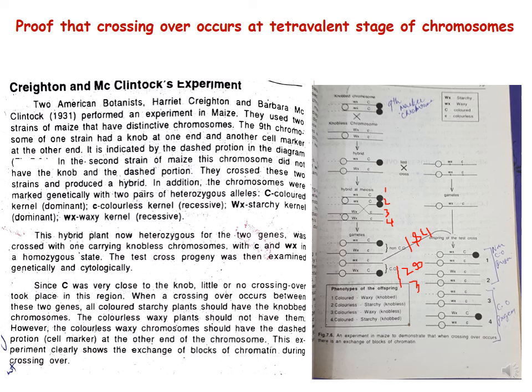Let us discuss Creighton and McClintock's experiment in detail. This experiment proves that crossing over occurs at the four-stranded or tetravalent stage of chromosomes. Two American botanists, Harriet Creighton and Barbara McClintock, performed an experiment in maize. They used two strains of maize that have distinctive chromosomes. The ninth chromosome of one strain had a knob at one end and a dashed portion (another cytological marker) at the other end.